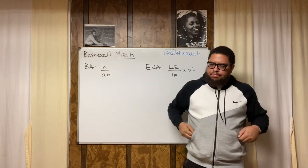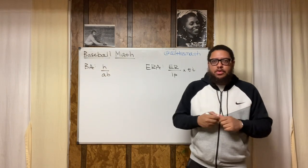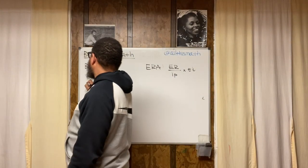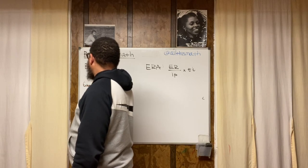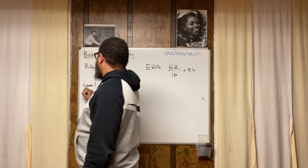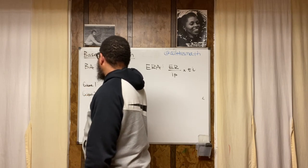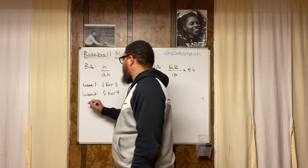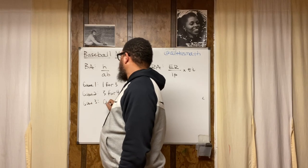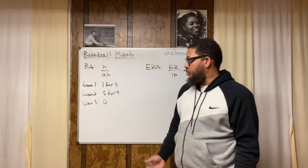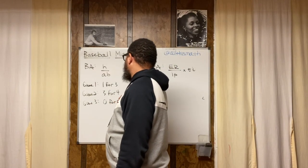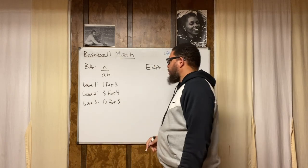So let's say you want to find your batting average after about three games. Let's say game one, you went one for three. Then in game two, you went three for four. Not bad. Then in game three, you didn't have a good game, or maybe that pitcher was just that good, he had your number, struck you out a couple times. So you went zero for three.